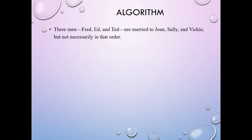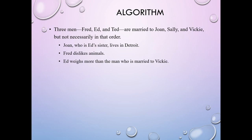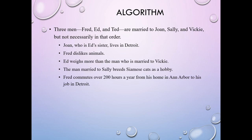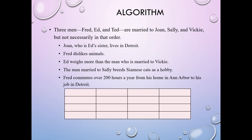Let me give you an example of a problem that requires an algorithm. We've got three men — Fred, Ed, and Ted — who are married to Joan, Sally, and Vicky, but not necessarily in that order. We need to figure out who's married to whom. The clues: Joan, who is Ed's sister, lives in Detroit. Fred dislikes animals. Ed weighs more than the man married to Vicky. The man married to Sally breeds Siamese cats. Fred commutes over 200 hours a year from Ann Arbor to Detroit.